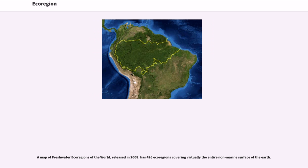A map of freshwater ecoregions of the world, released in 2008, has 426 ecoregions covering virtually the entire non-marine surface of the earth.